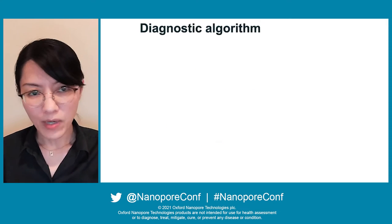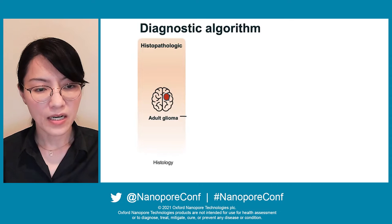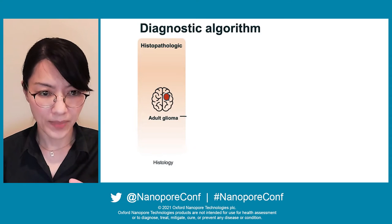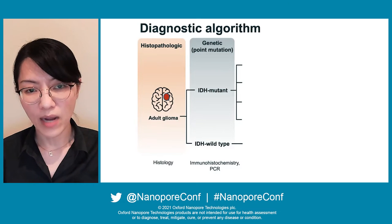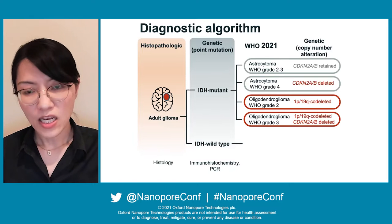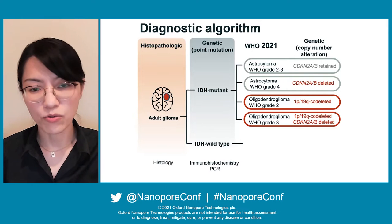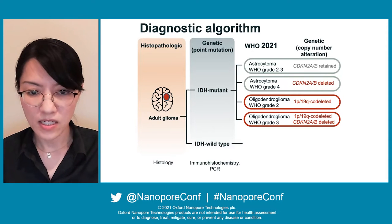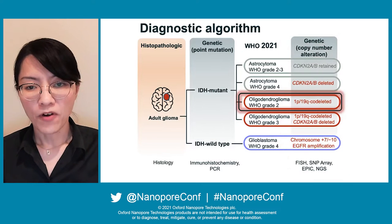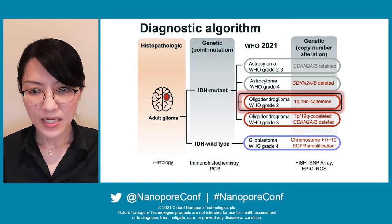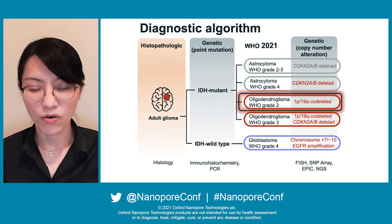I would like to show the diagnostic algorithm of glioma classification. The first step: clinicians observe the histology of glioma and then send the tissue to test for IDH mutation, which can classify patients into IDH mutant and IDH wildtype. Under IDH mutant, copy number alteration can be used to classify the patient into four entities. For example, if we find 1p19q co-deletion, we can classify this patient as oligodendroglioma WHO grade 2.